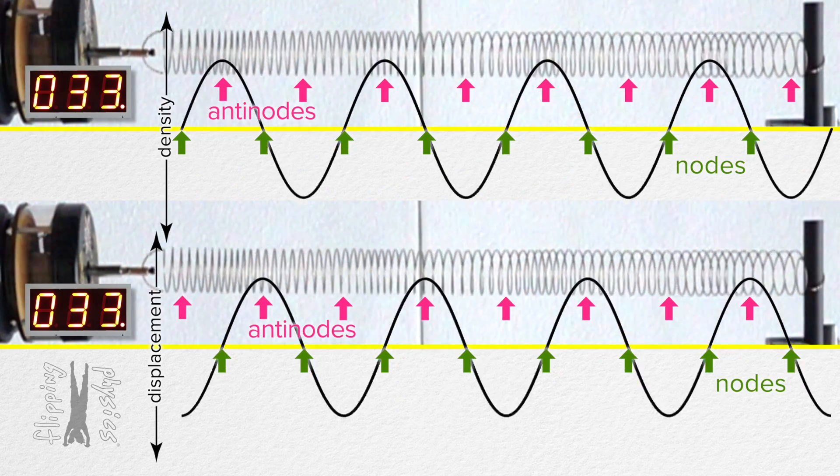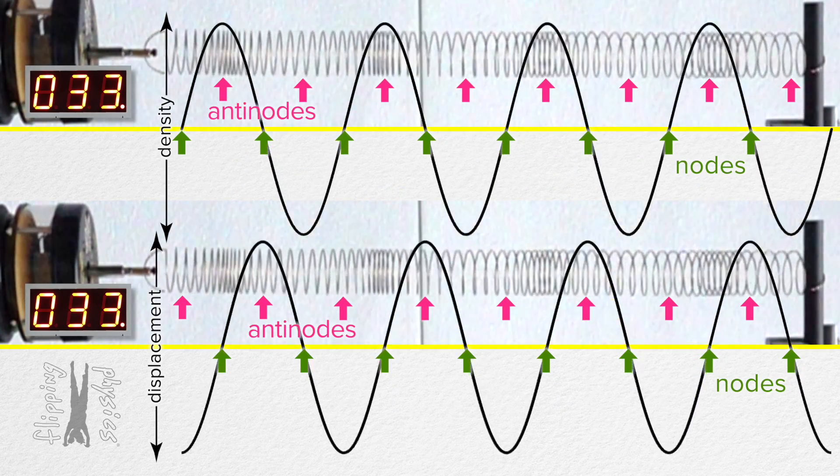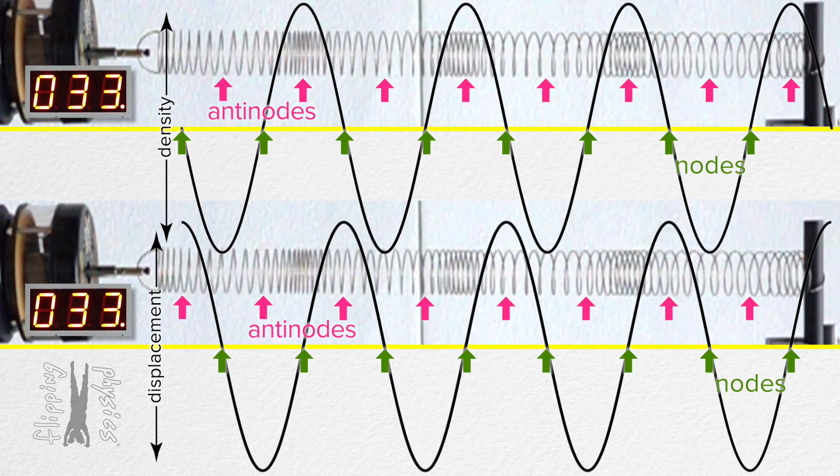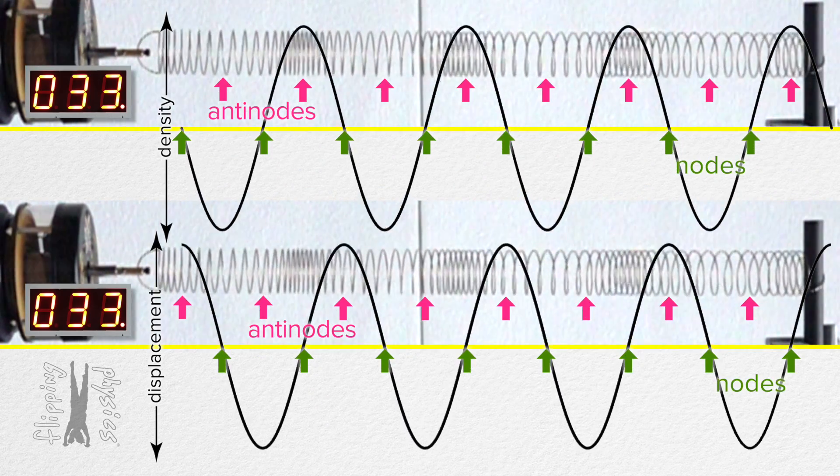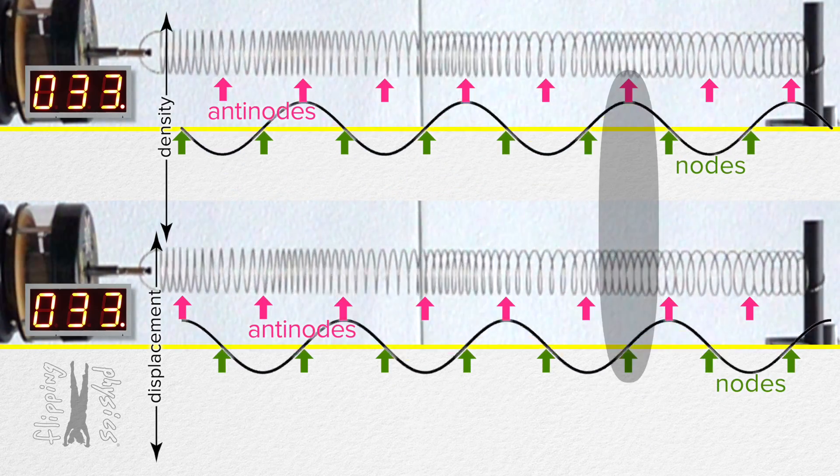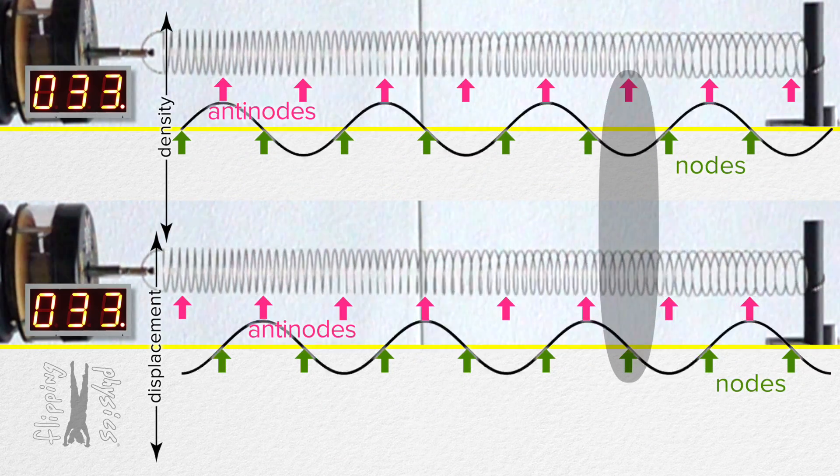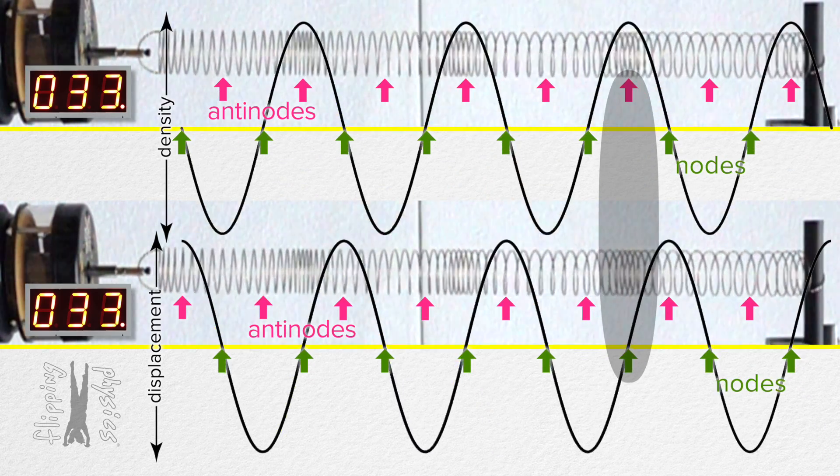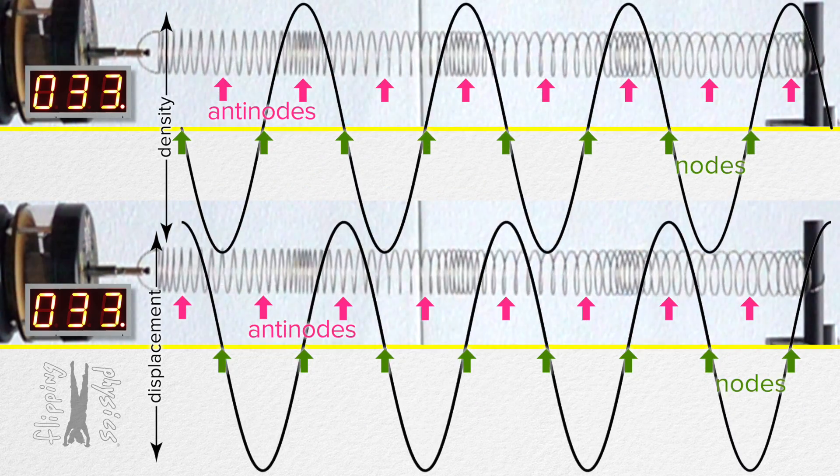Correct. The top animation is in terms of density and the bottom animation is in terms of displacement. And you can see how each of the density nodes is a displacement anti-node and each of the density anti-nodes is a displacement node. That will be helpful to understand when we get to standing sound waves in musical instruments.